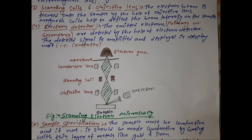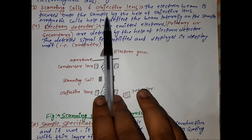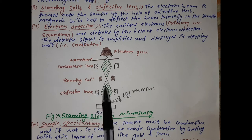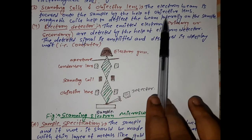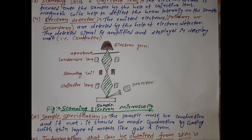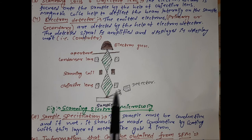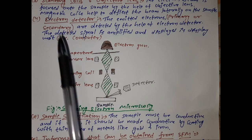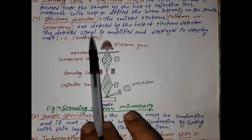The electron beam is focused onto the sample by the objective lens, as shown in the figure. Magnetic scanning coils help to deflect the beam laterally over the sample. The emitted electrons — primary or secondary — are detected by an electron detector. The detected signal is amplified and displayed in a display unit, that is, on a computer.